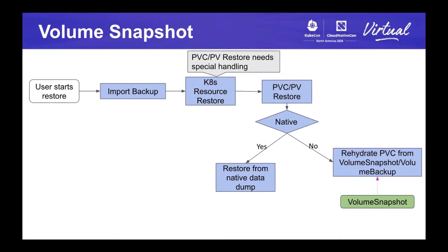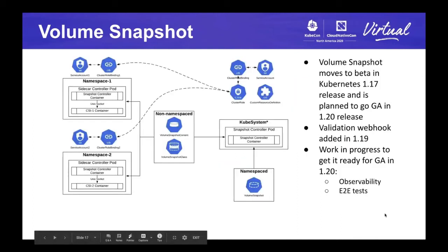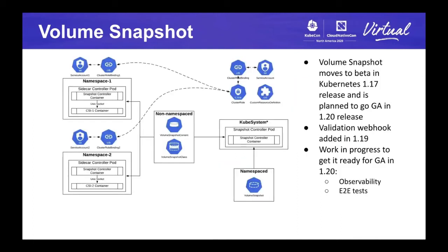Volume snapshot has been moving to beta since 1.19. We plan to move the feature to GA in 1.20. A validation webhook has been added in version 1.19. We are working on enhancing observability around the controllers and adding more end-to-end tests, mostly stress tests. We are looking forward to the GA of this feature.